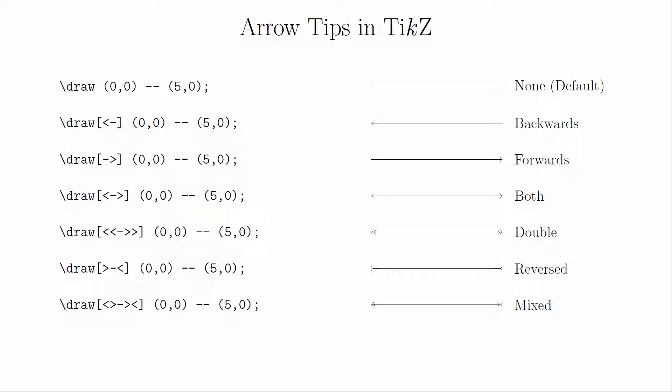You can also specify whether you want arrow tips on the ends of lines, including multiple arrowheads and arrowheads facing in multiple directions. There's an entire section in the TikZ documentation that discusses arrow tips, including how to customize their shape and size. If you want to learn more, you'll have to read about it yourself.